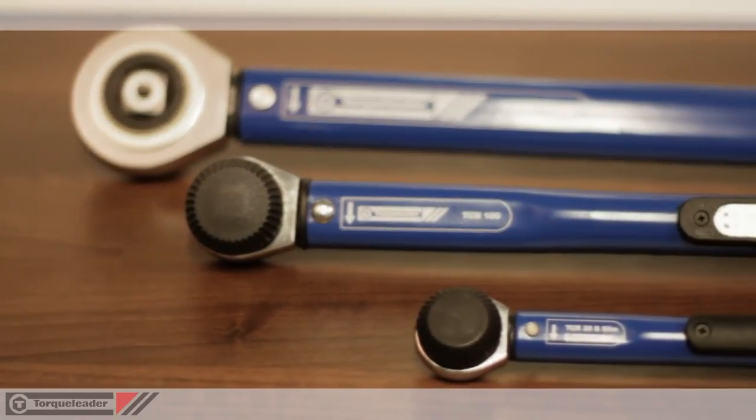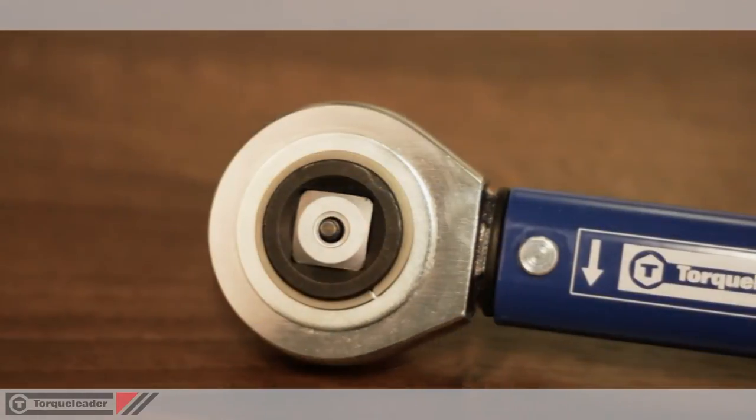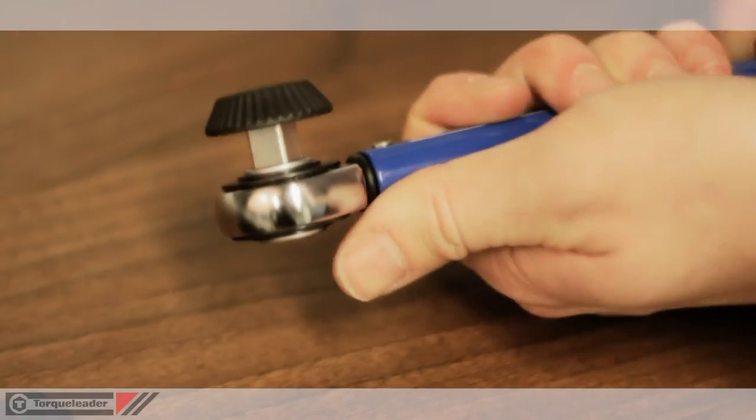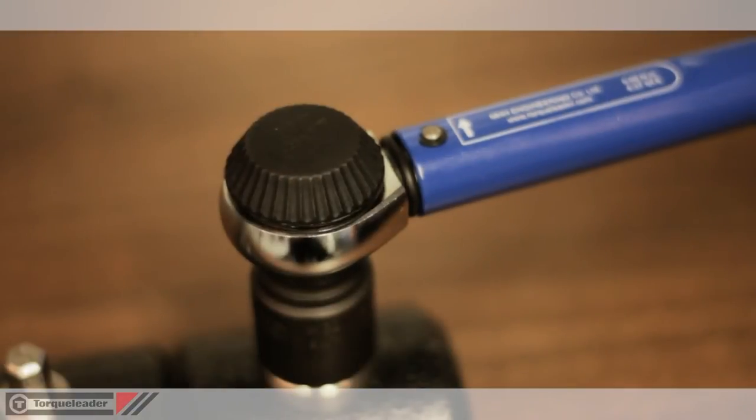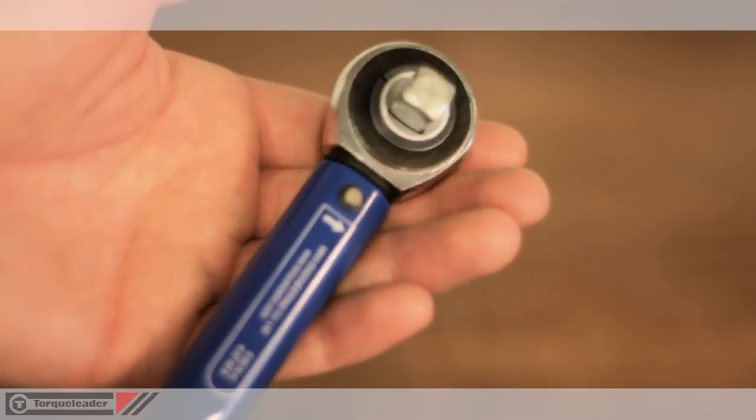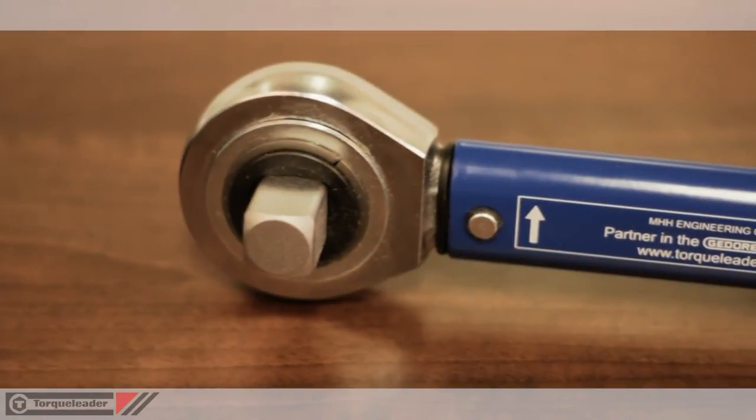TCR models cover an overall range of 1-750Nm and have a permanently fitted push-through ratchet head for torque tightening both clockwise and anti-clockwise. The smallest models have a quarter inch drive. The largest is three quarter inch.